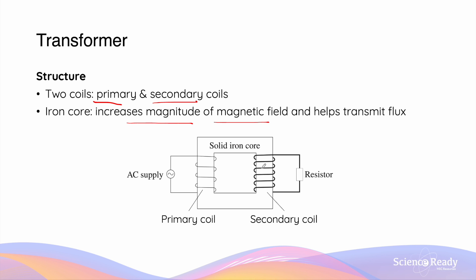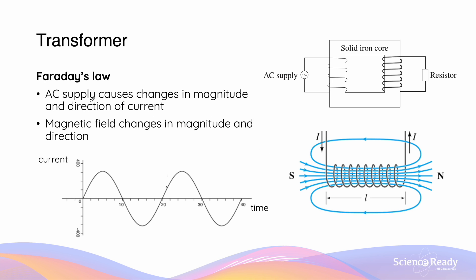We'll have a look at the iron core in further detail in a moment. The primary coil is connected to an alternating current, or AC, power supply. The AC supply causes changes in both the magnitude and the direction of current flowing through the primary coil. Recall that the magnitude of current flowing through the coils determines the magnitude of the magnetic field it produces, and the direction of current also determines the direction of the magnetic field. As shown by this graph, as the current changes with time in the primary coil, the magnetic flux it produces also follows the same pattern with time.